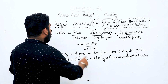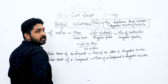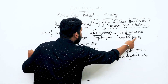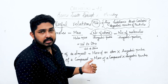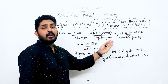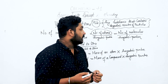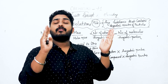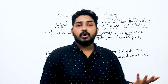From number of atoms, we can find the number of moles. Number of atoms will relate to number of molecules as well. We apply the equation: Avogadro's number multiplied by number of moles. We can convert number of moles to number of atoms and number of molecules.